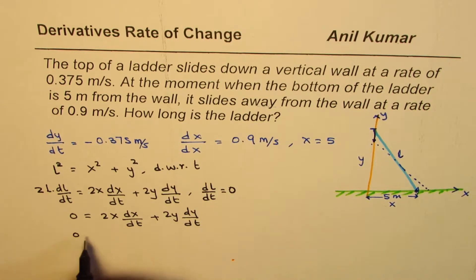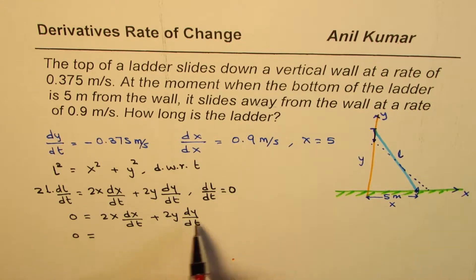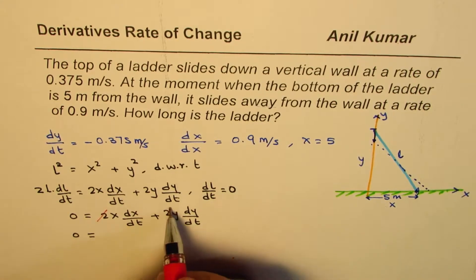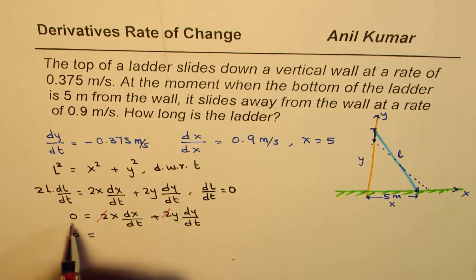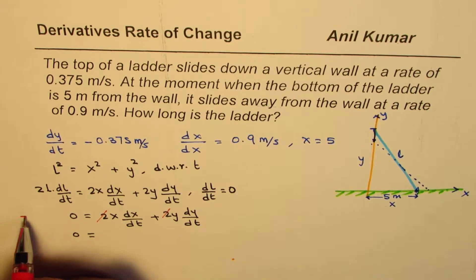Well, we could actually divide by 2, simplify this a bit. So we have 0 equals... we are dividing by 2 the whole equation, right? So this 2 and this 2 cancel by dividing by 2.